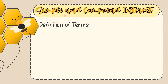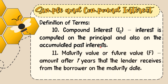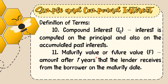The tenth term is compound interest, symbolized as I sub c — the interest computed on the principal and also on the accumulated past interests. The eleventh term is maturity value or future value, symbolized as the letter F — the amount after t years that the lender receives from the borrower on the maturity date.